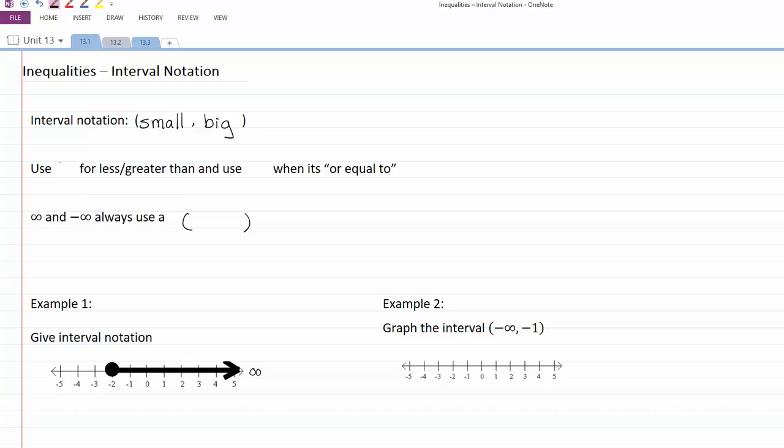We use parentheses for less than or greater than symbols, and we use a bracket when we have less than or equal to or greater than or equal to.